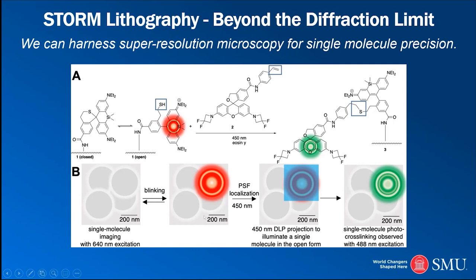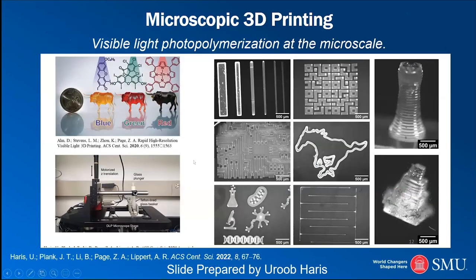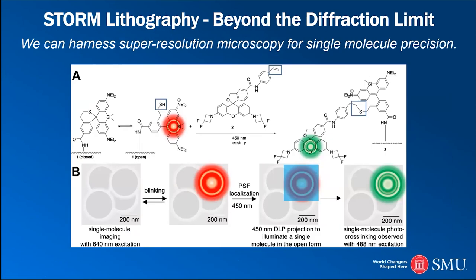Our idea is to couple the blinking so that when the molecule is on, it releases a chemical functional group. We can then do a photochemical reaction only at that single fluorescent site — when it's in the closed sulfide form, it can no longer react. This way we can assure the reaction happens only at that single molecule. We've falsified one initial hypothesis but have two other systems that look promising, hoping to accomplish this in the next year.